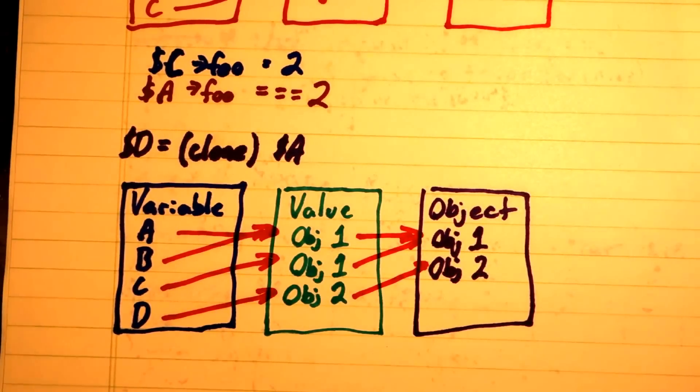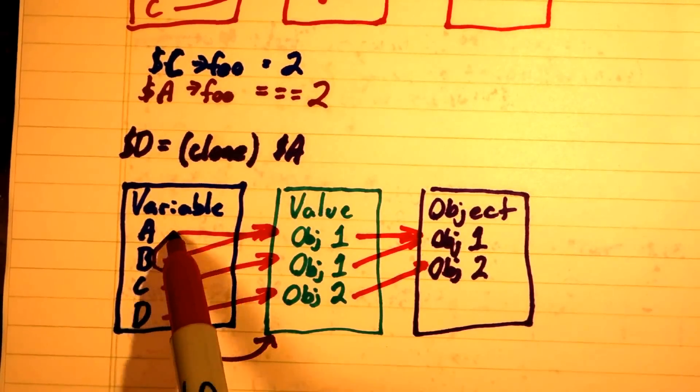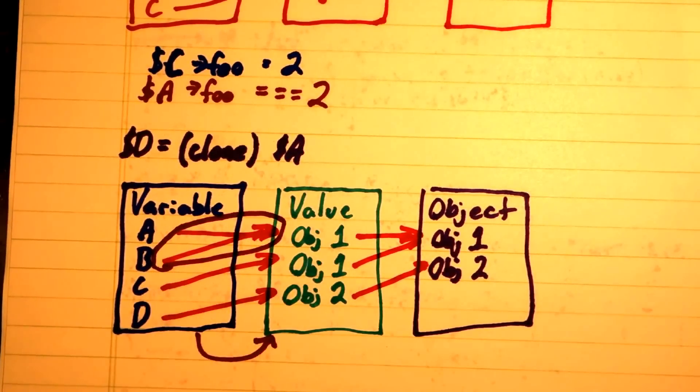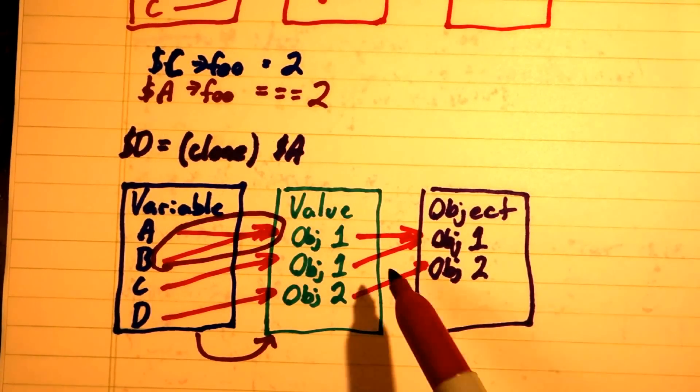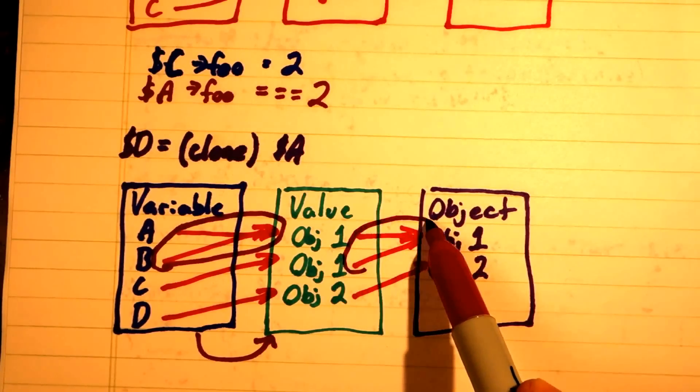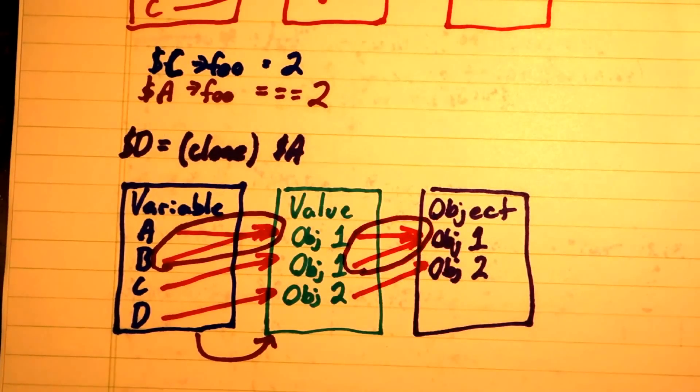So variables point to values, and variable references force multiple variables to point to the same value. Object references, on the other hand, allow multiple values to point to the same object.